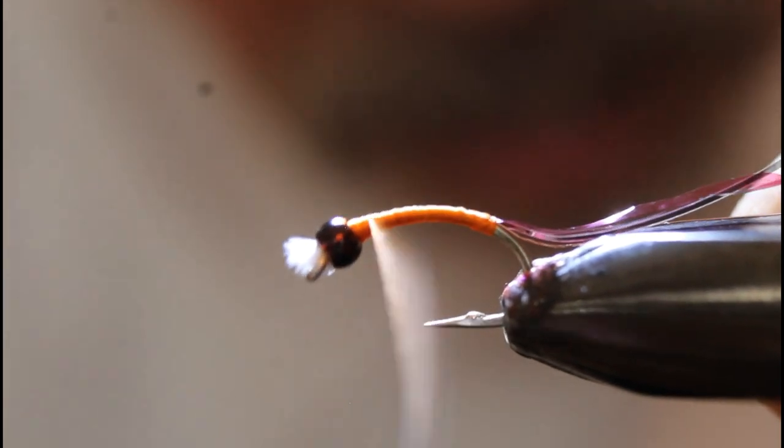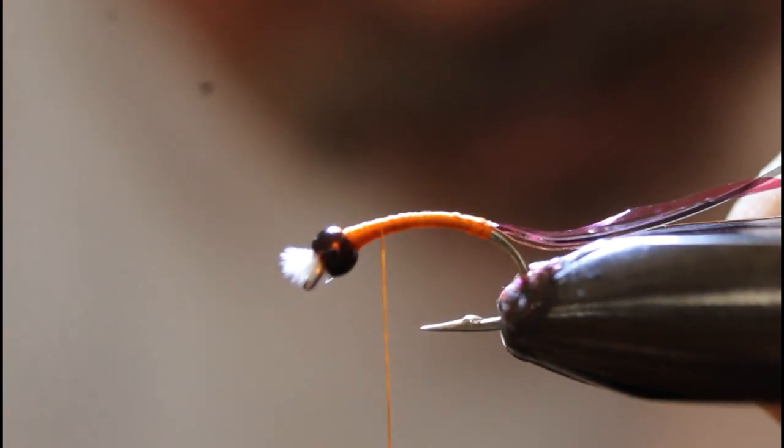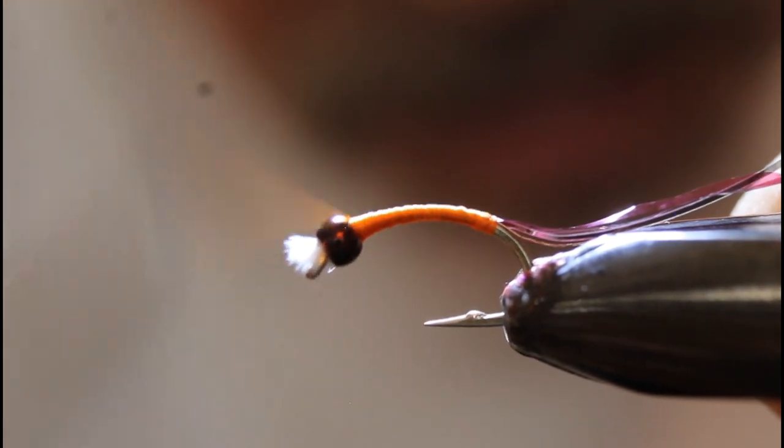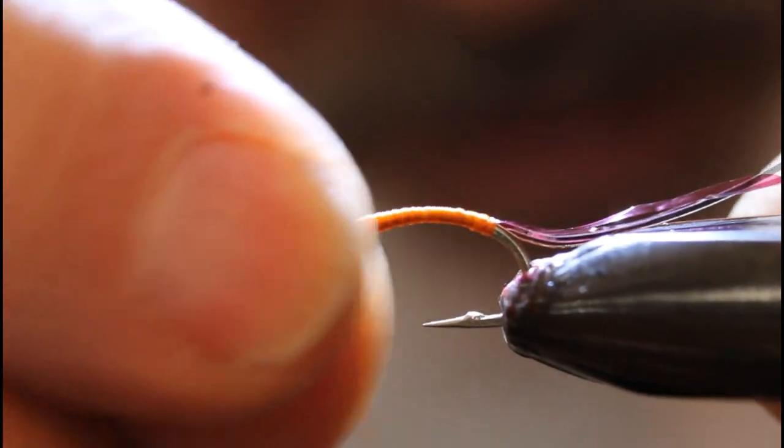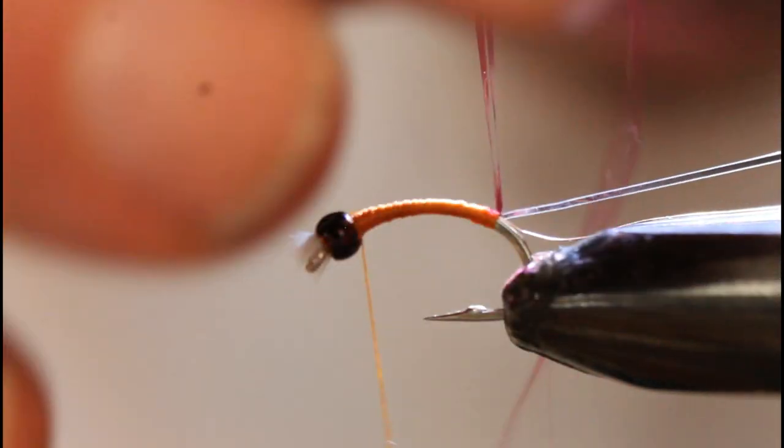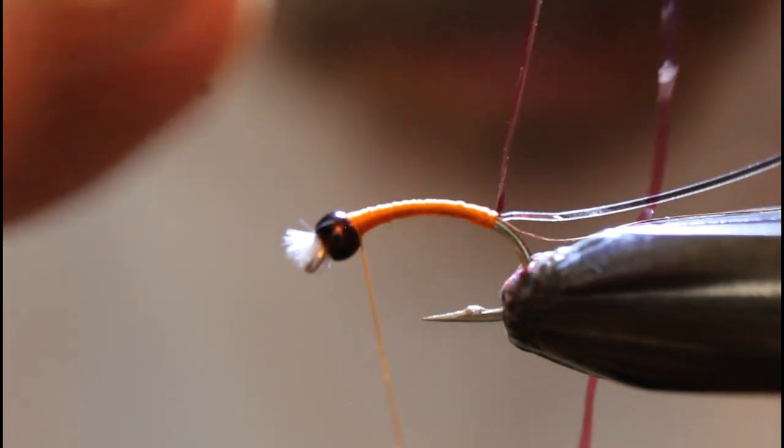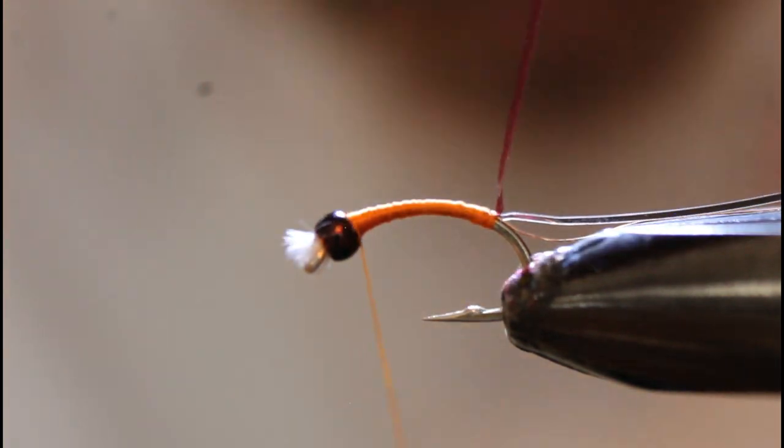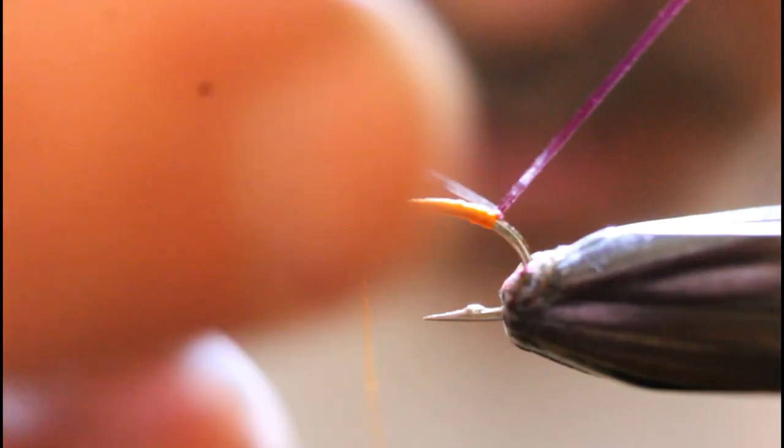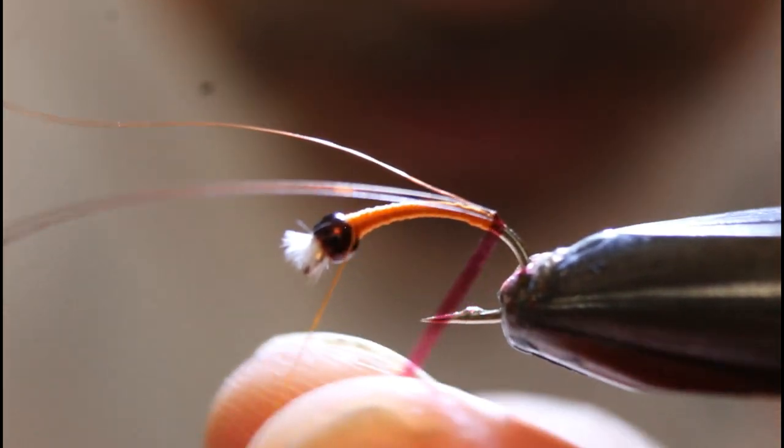Now we're going to build up a bit of a shoulder here. Lock that bead forward and come back all the way to the point of the hook, about even with the point there, and then come back forward again. Then back about halfway to the point and then back forward again. Test it to make sure that bead is locked in place.